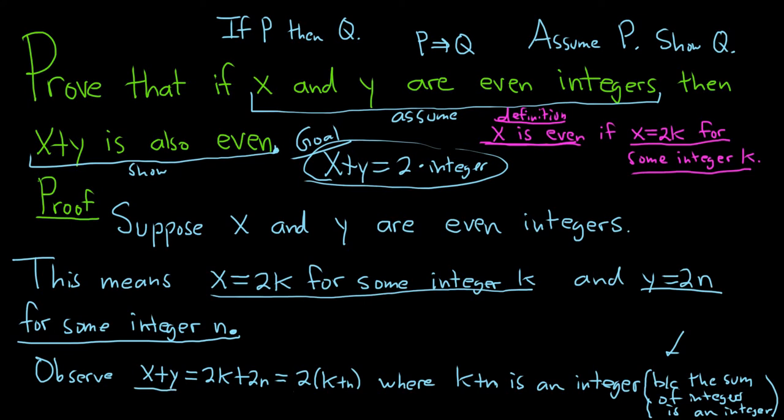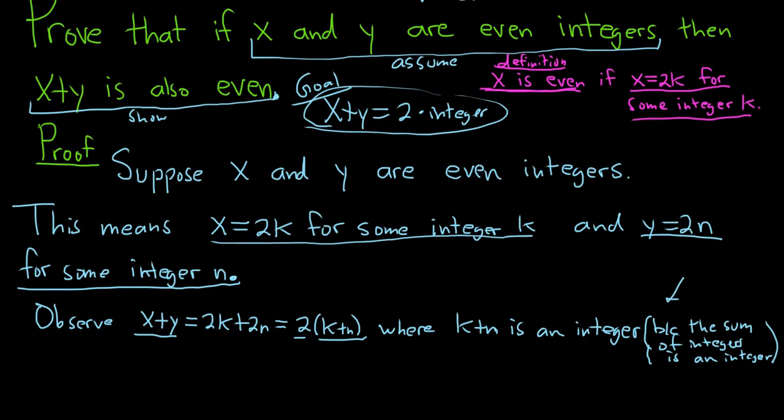So we have x plus y equals 2 times an integer. So that's precisely what it means for x plus y to be even. So this means x plus y is even. And that's it. We've finished the proof. And typically when you finish a proof, you can finish it with some type of symbol.